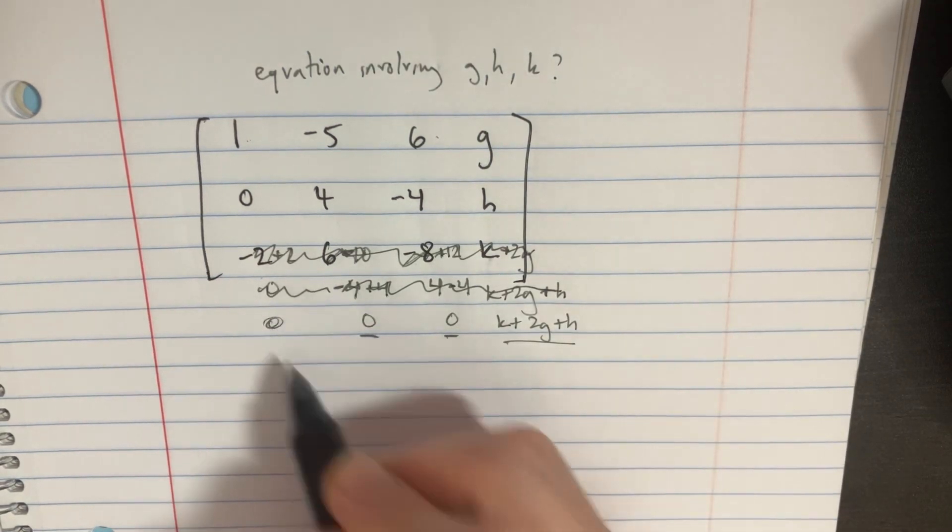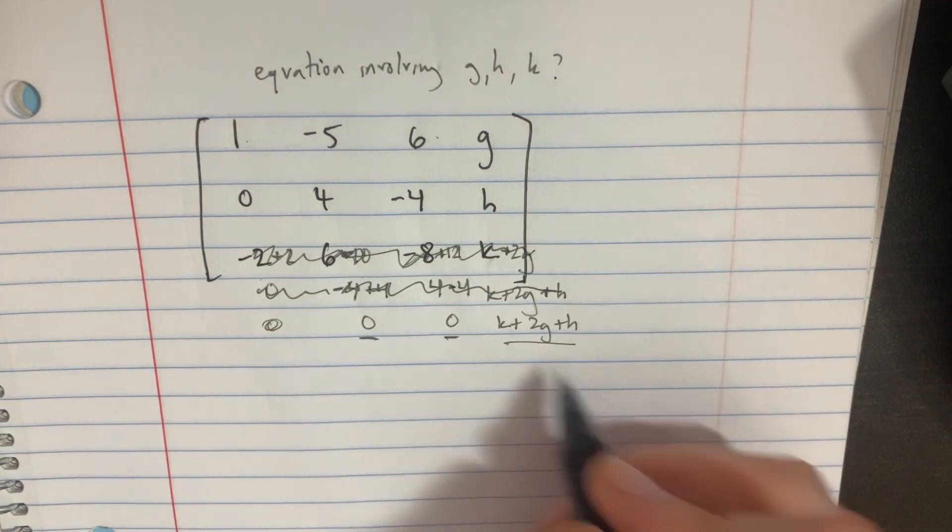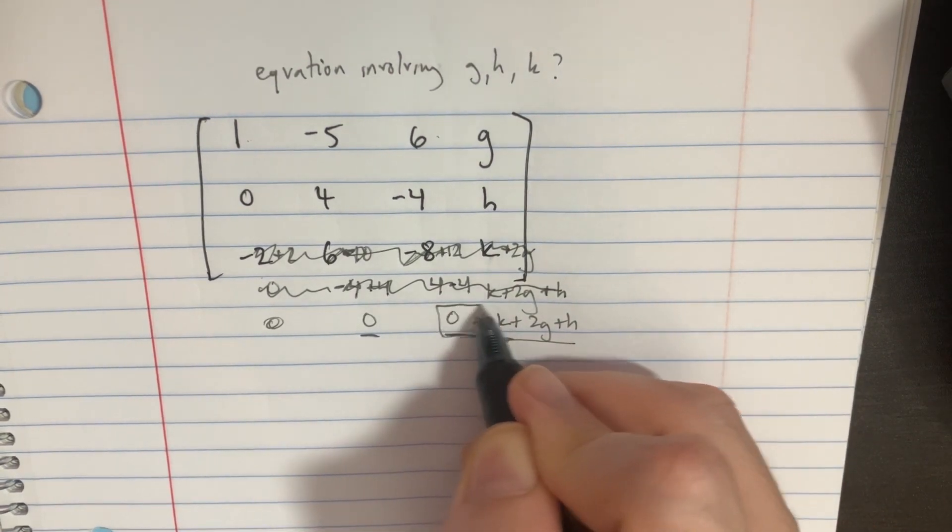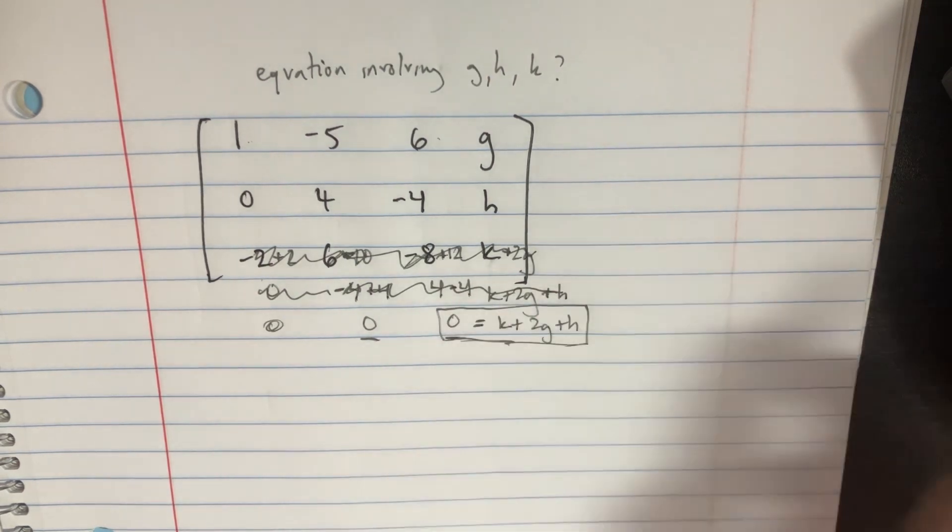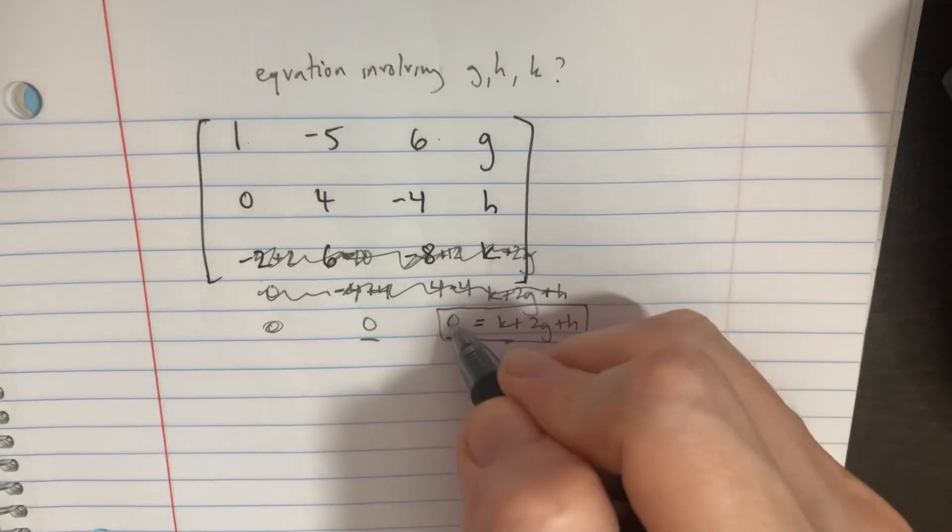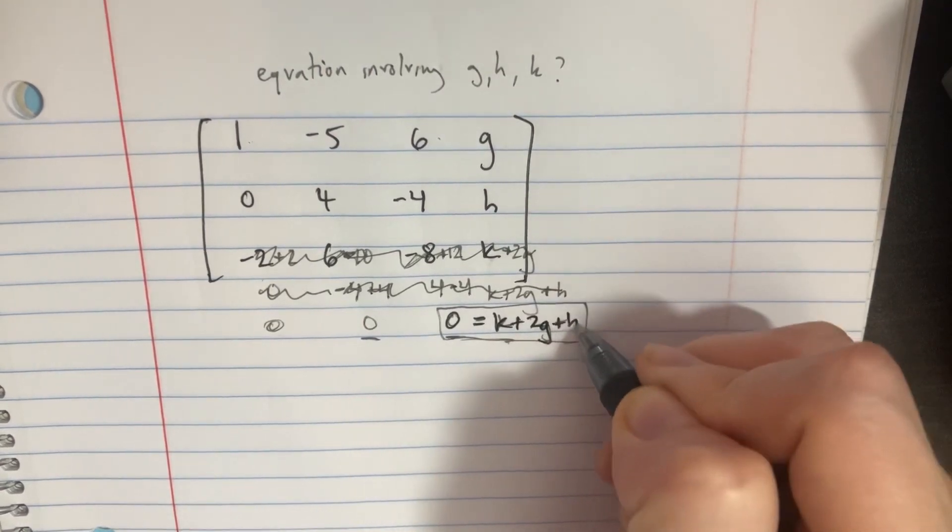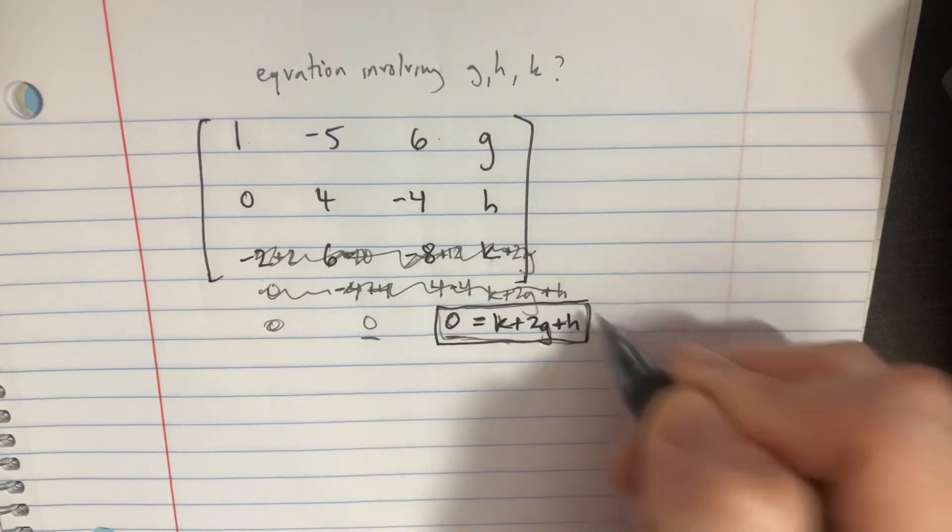It would be a 0 over here, of course. Now this gives us this equation here. 0 equals k plus 2g plus h, and that is the equation that we were looking for in order to solve this. So, cool.